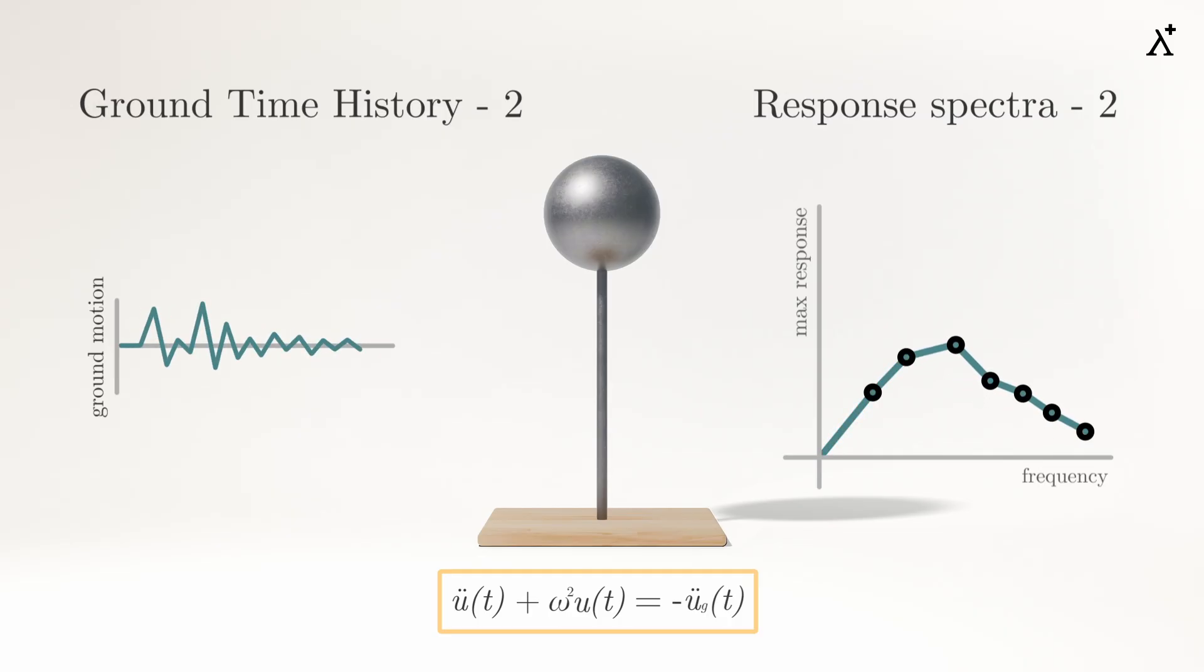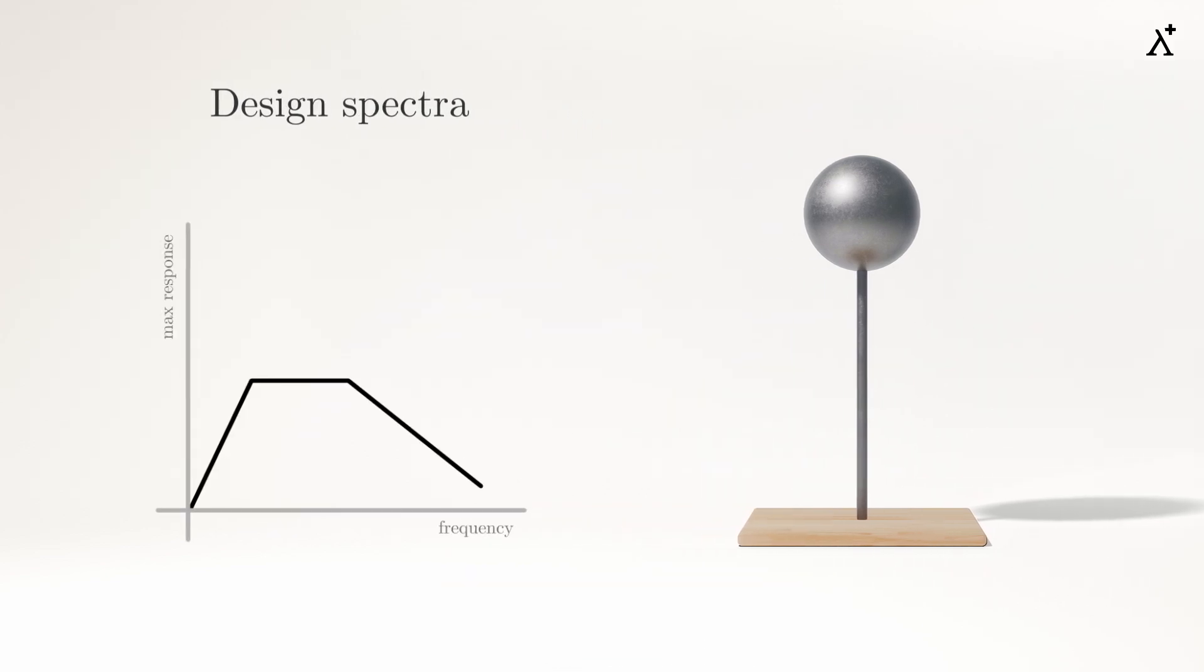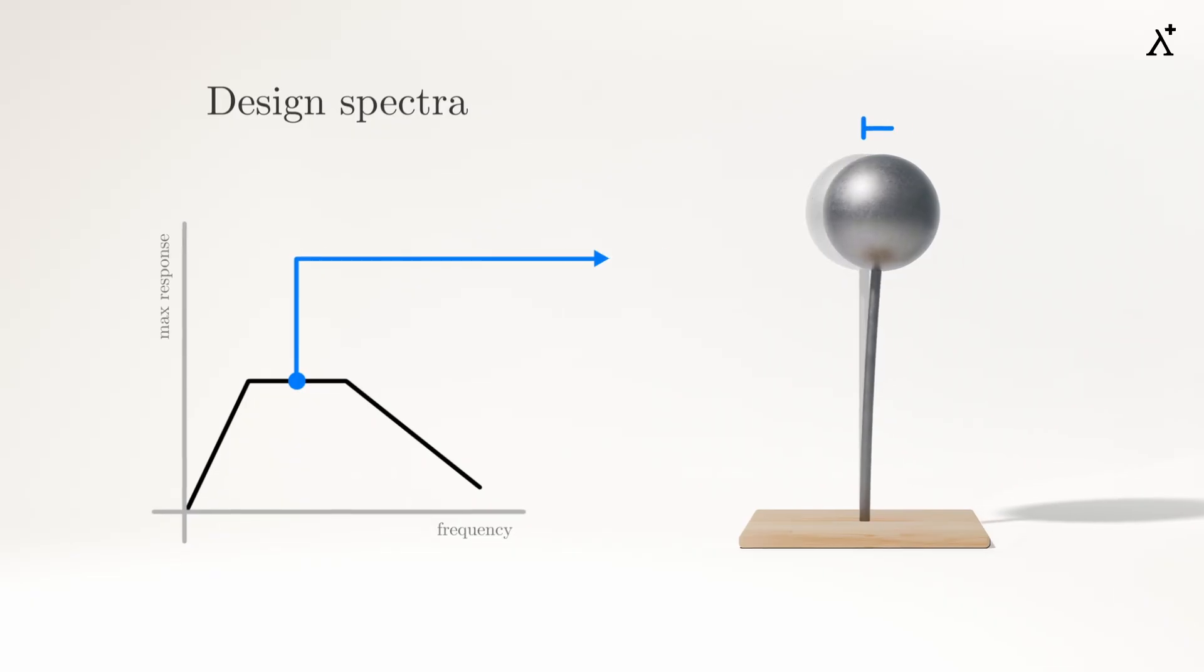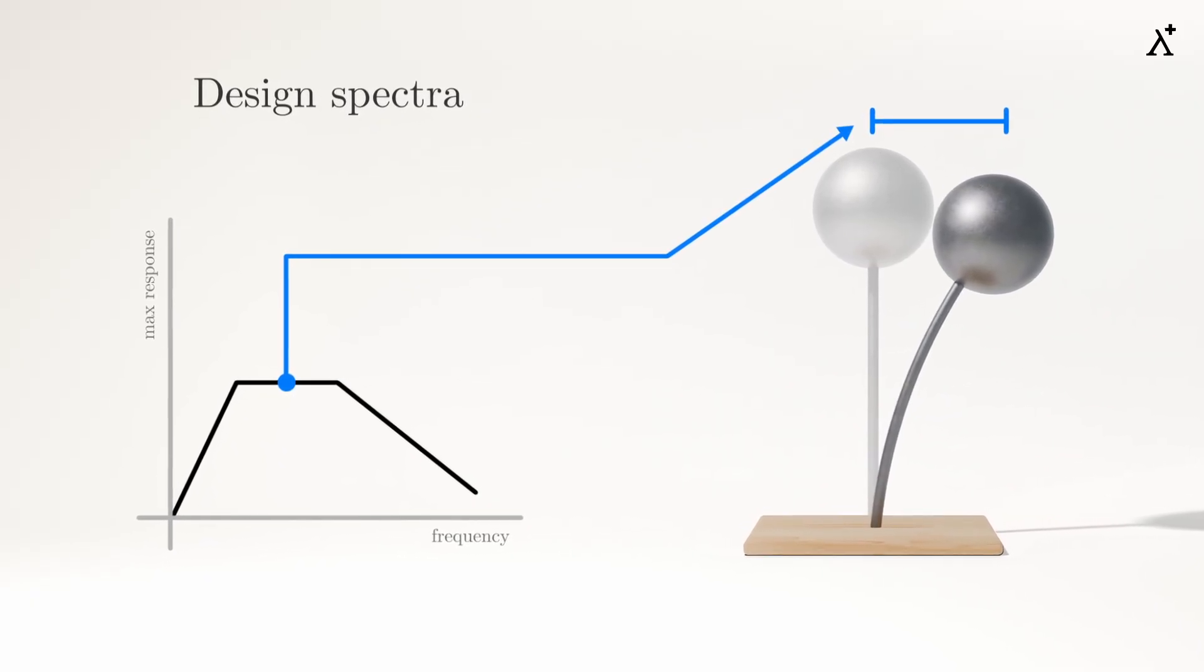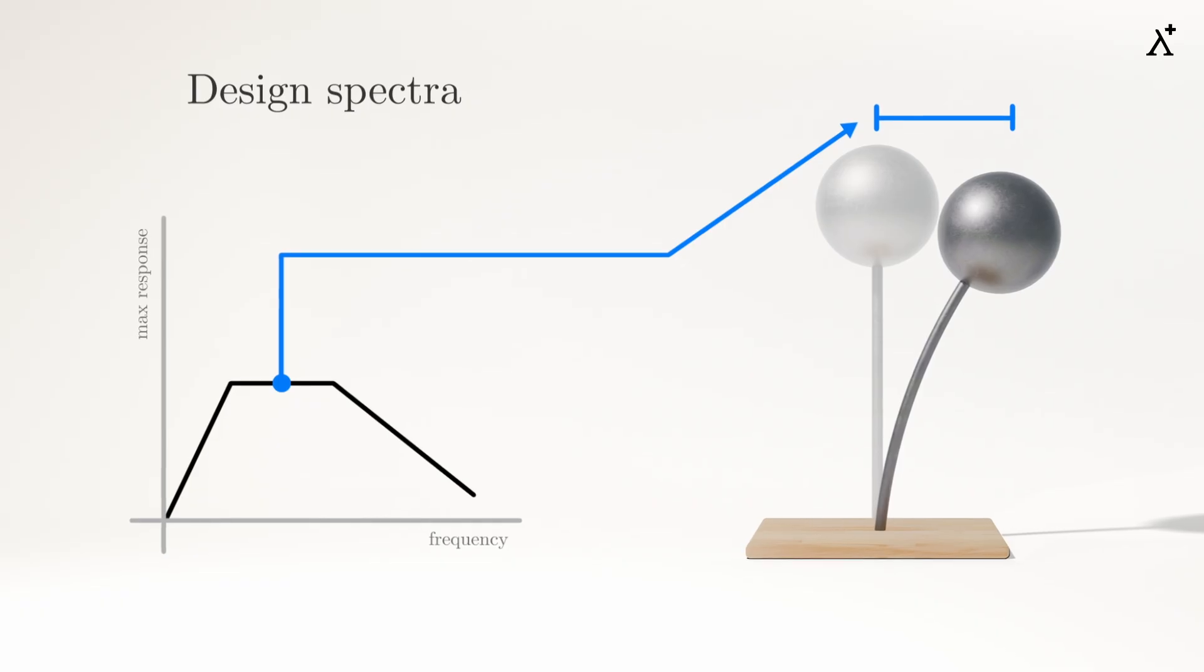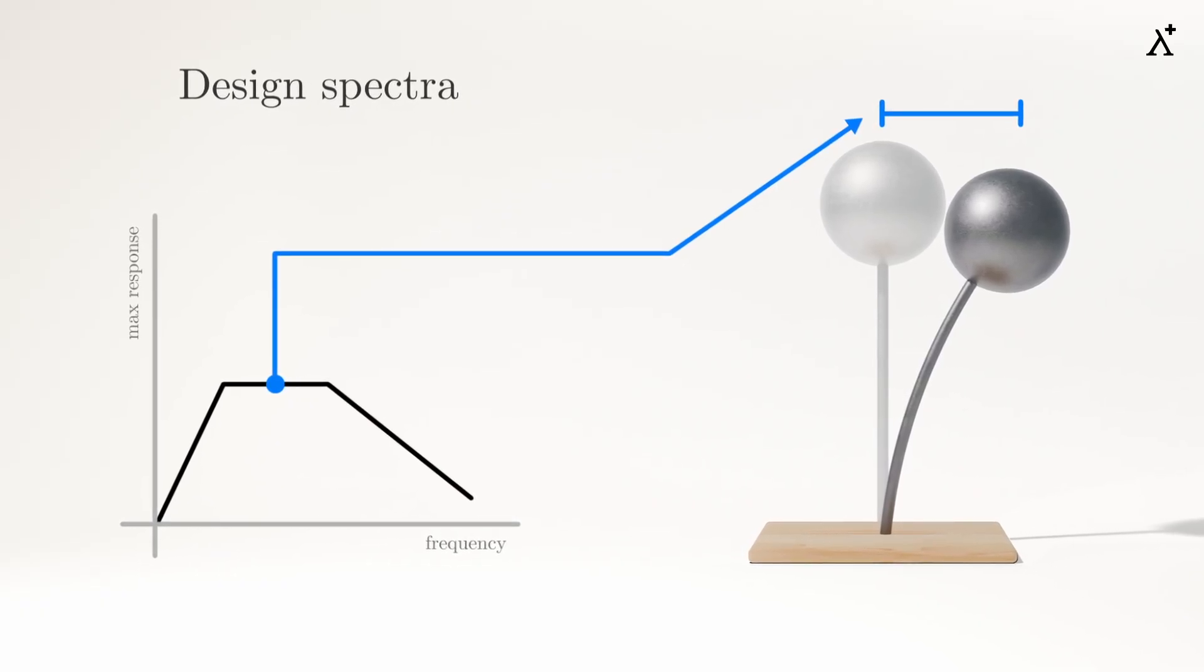We could generate multiple such response spectrums for different input time histories and envelop them to get the design spectrum. And that is it. Once created, it could be used to directly predict the maximum response of any structure in a given seismic zone. We could just evaluate the structure's natural frequency and get the corresponding response from the spectrum without undergoing the tedious calculations.